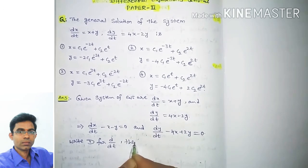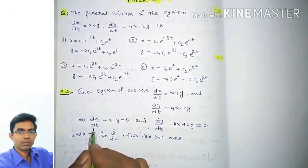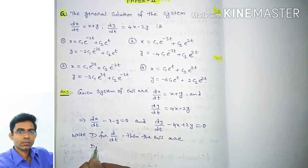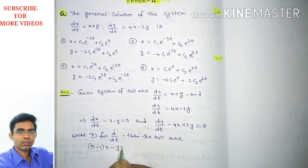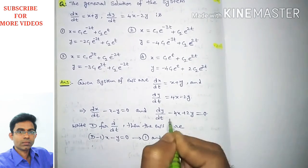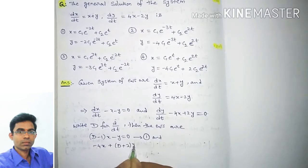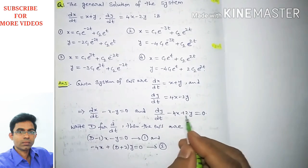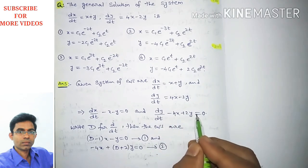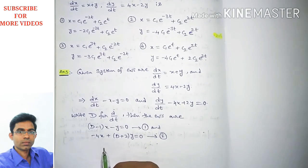Writing capital D for d/dt, the first equation becomes (D − 1)x − y = 0, call this equation 1. The second equation becomes −4x + (D + 2)y = 0, call this equation 2.